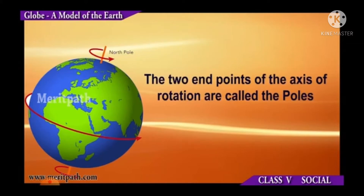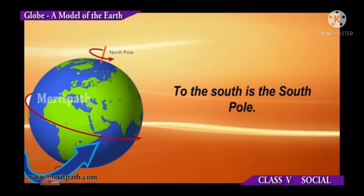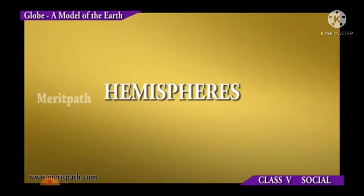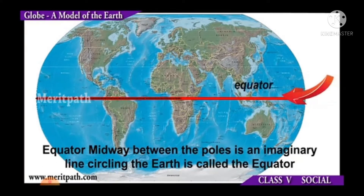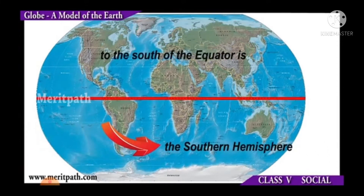The two end points of the axis of rotation are called the poles. To the north is the north pole and to the south is the south pole. Hemispheres — midway between the poles is an imaginary line circling the earth called the equator. The equator divides the earth into two equal halves called the hemispheres. To the north of the equator is the northern hemisphere, and to the south of the equator is the southern hemisphere.